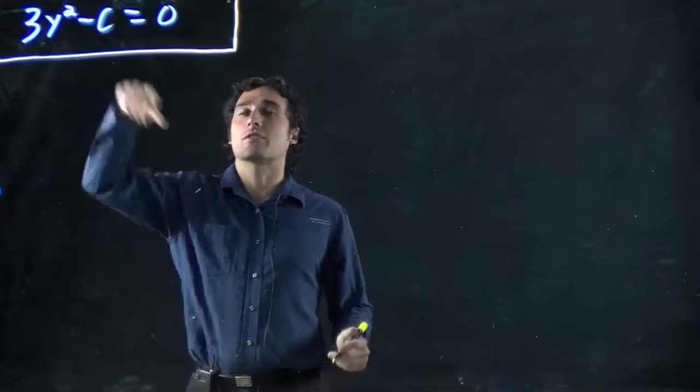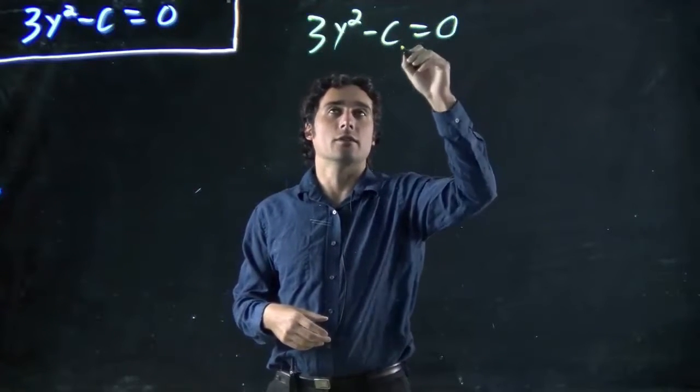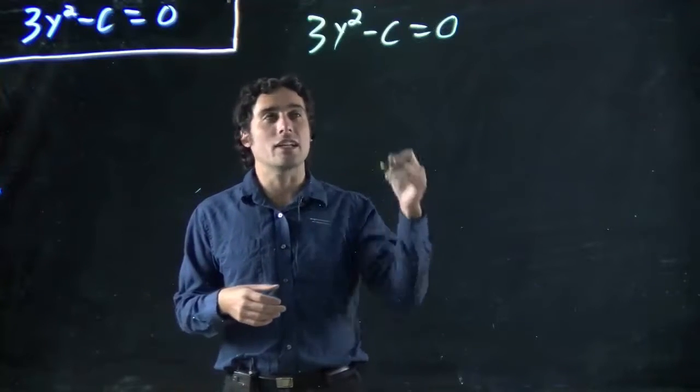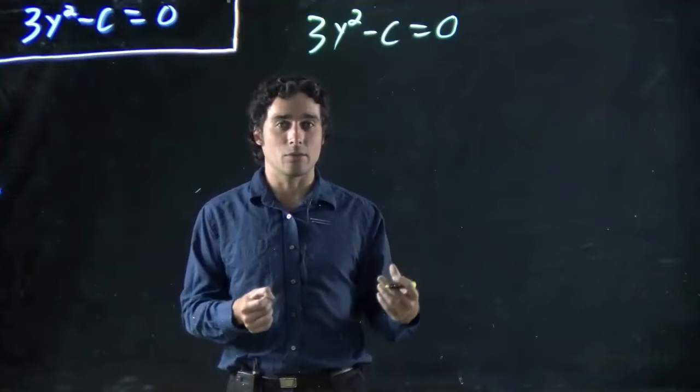So what we got is 3y squared minus c equals 0. Again, it doesn't matter that it's a variable. Last example I did, I had a number. Variables, numbers, the math is still the same. That's the important thing.